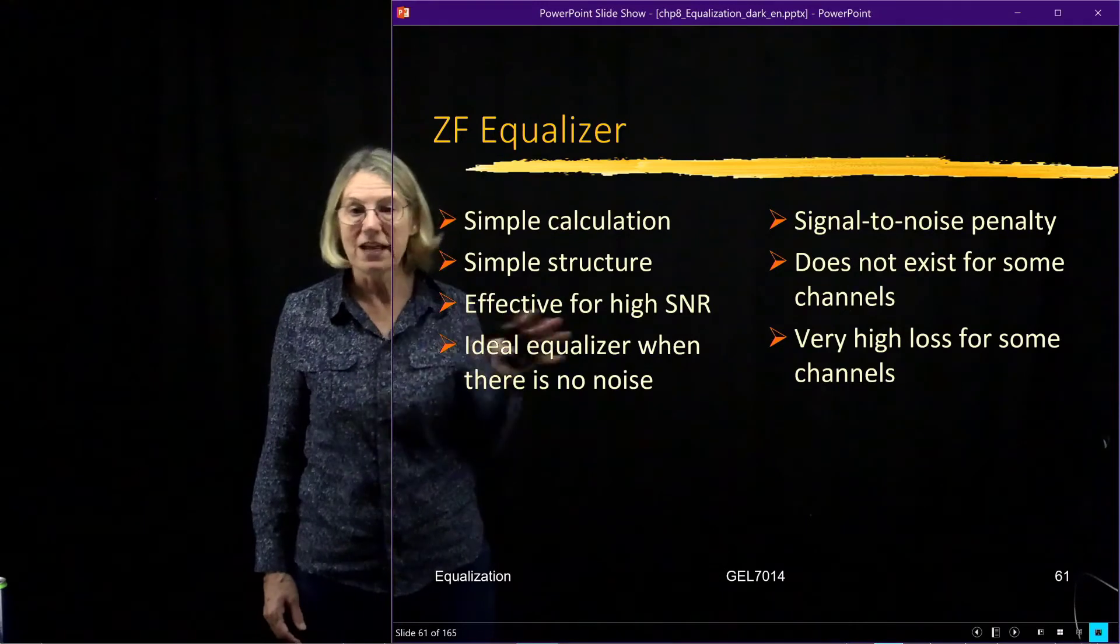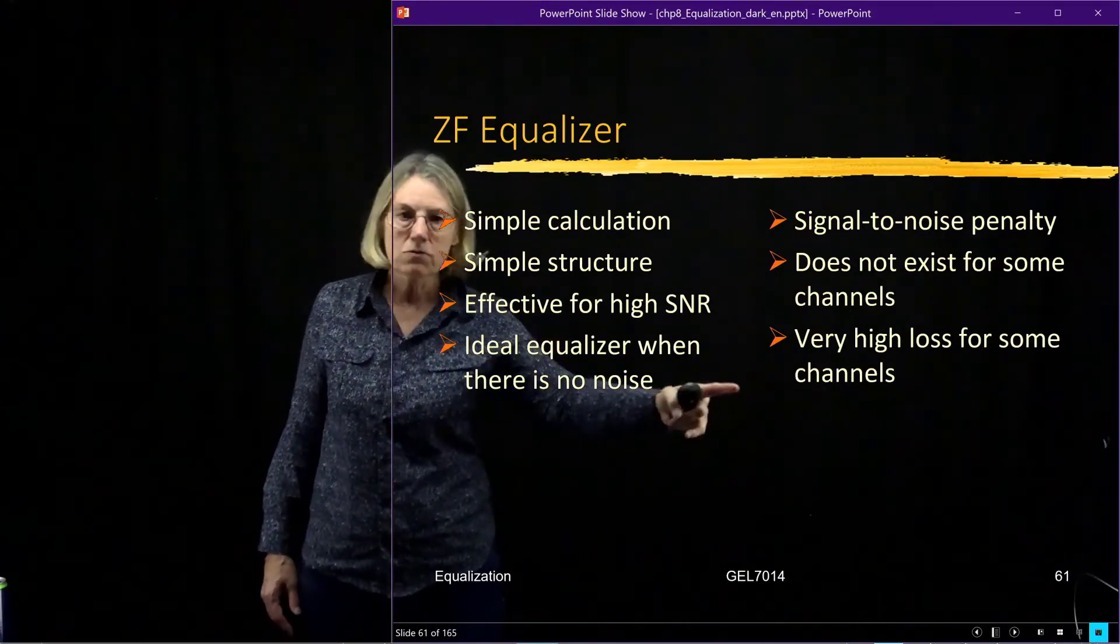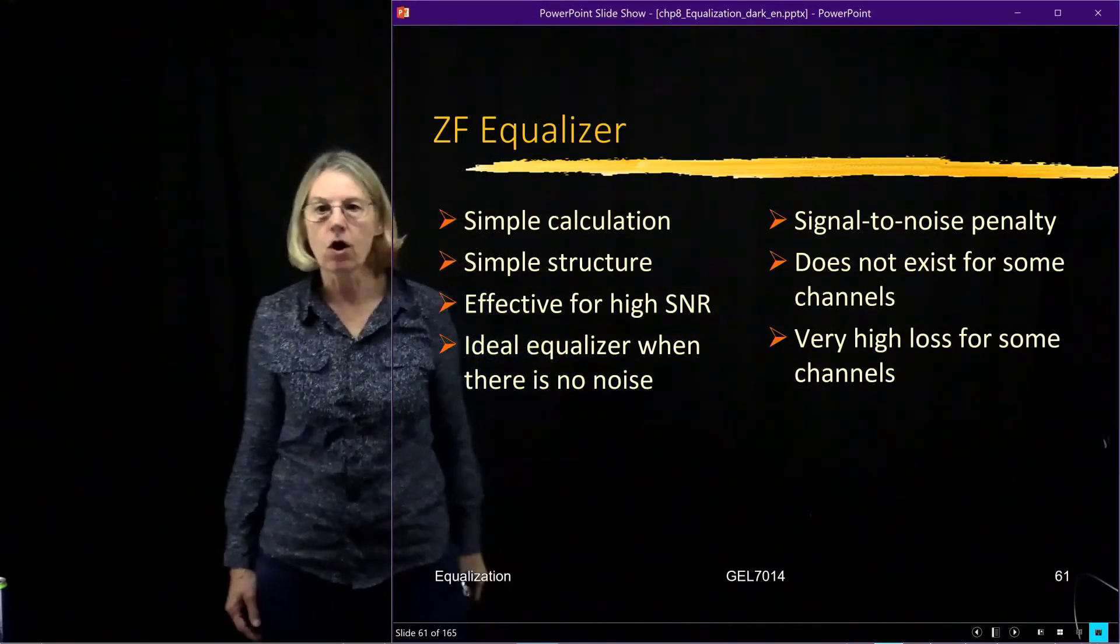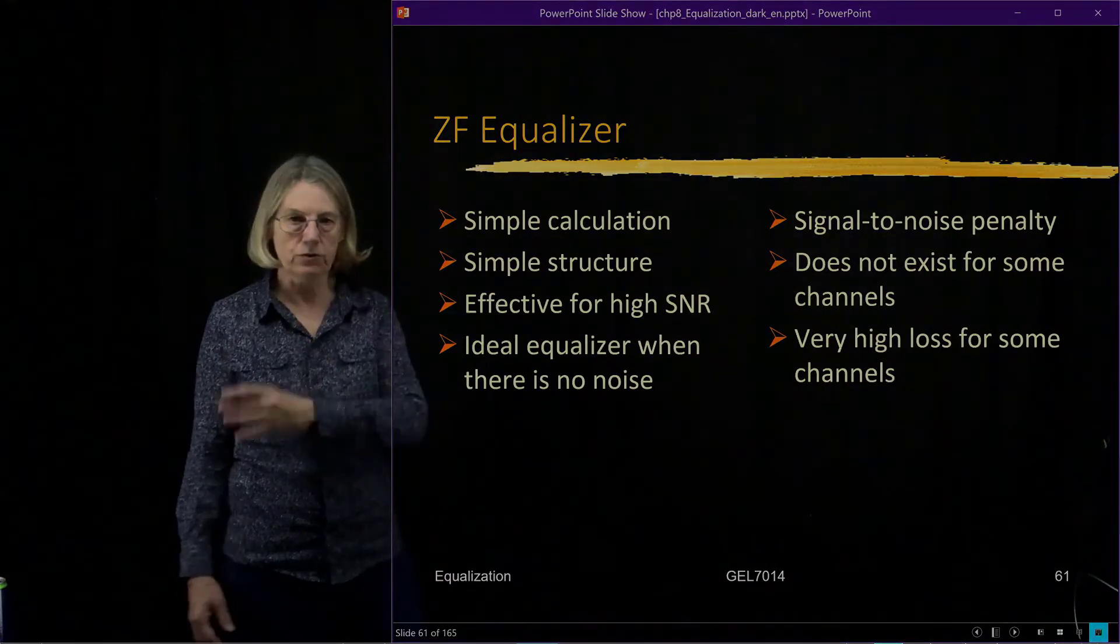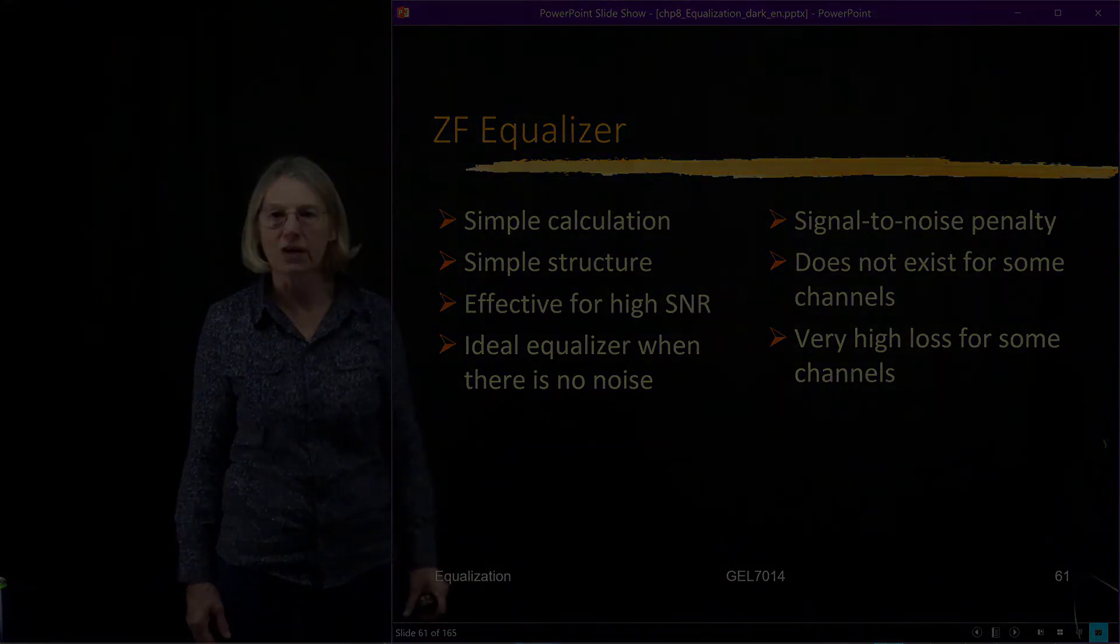In the case of some of these channels where there are deep fades, maybe not completely to zero, but those channels will have very high loss when we try to implement the zero forcing equalizer.